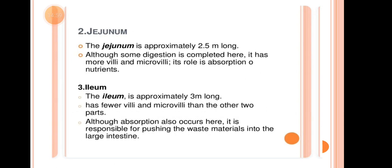Next is the Jejunum, approximately 2.5 meters long. Although some digestion is complete here, it has more villi and microvilli than the duodenum, enabling better absorption of nutrients.